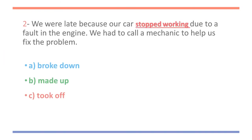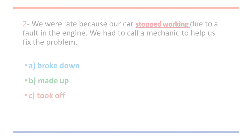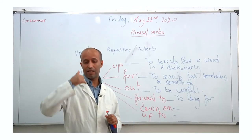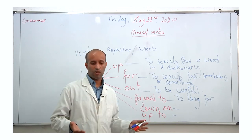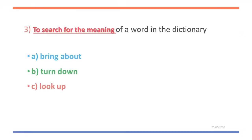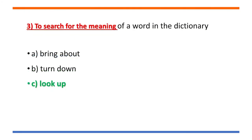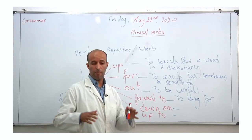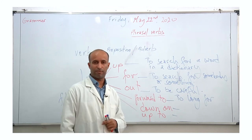Number two: we were late because our car stopped working due to an engine fault — we had to call a mechanic to help fix it. The answer is A — 'broke down.' Number three: to search for the meaning of a word in the dictionary — that's 'look up.' Look up a word in the dictionary if you don't understand it.